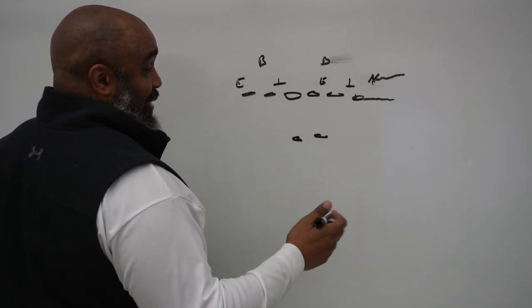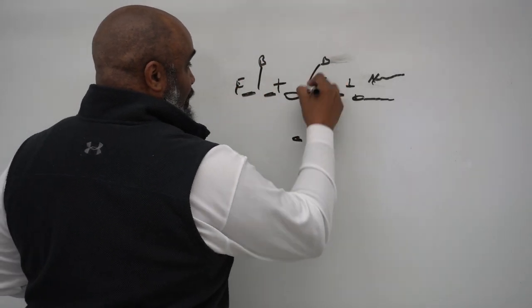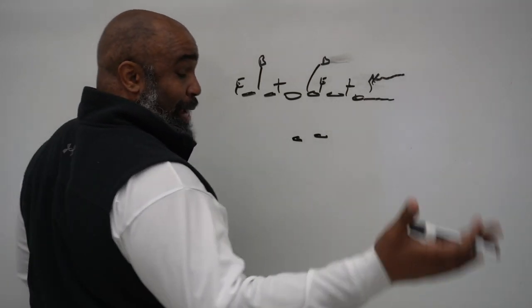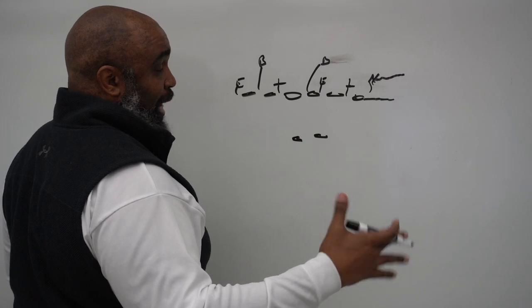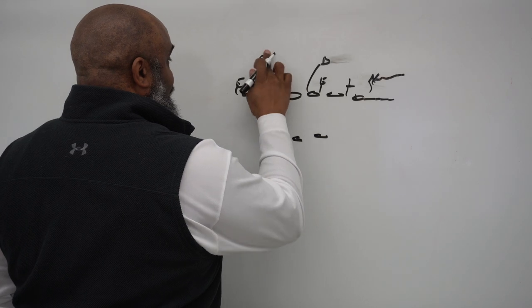So you've got gap responsibility versus the run. You've got all the gap responsibility versus the run. Now in pass protection, your blitz options are limitless.